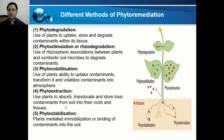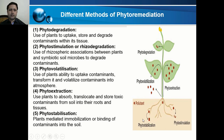In phytoextraction, plants absorb, translocate, and store toxic contaminants from soil into their roots and tissues. Another method is phytostabilization, in which plant-mediated immobilization or binding of contaminants into the soil occurs. As shown in the figure, roots cause immobilization or binding of contaminants in the soil so they are not freely available and cannot cause toxicity.